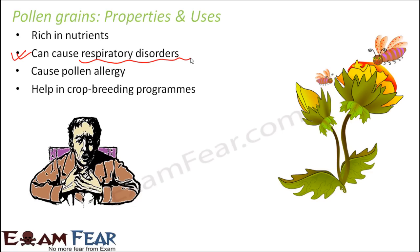These are some of the important properties and uses of pollen grains. By now we have covered the male reproductive part of a flower — the structure of the androecium, the microsporangium where the formation of male gametes starts, how microspores were formed, how microspores gave rise to pollen grains, and how these pollen grains contain the male gametes. Now we have to understand how the female gametes will form, and that is what we are going to do in the next section.